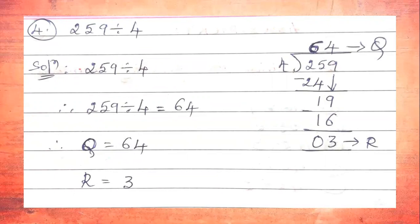From the 4-table: 4×1=4, 4×2=8, 4×3=12, 4×4=16, 4×5=20, 4×6=24, 4×7=28. Since 28 is more than 25, we take 4×6=24. We write 24 and subtract: from 5 subtract 4 gives 1, and 2−2=0. We pull down the number 9, making it 19.